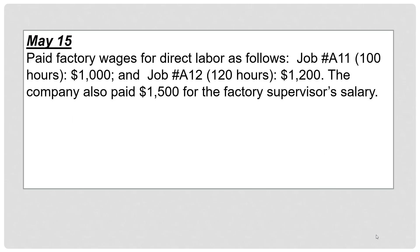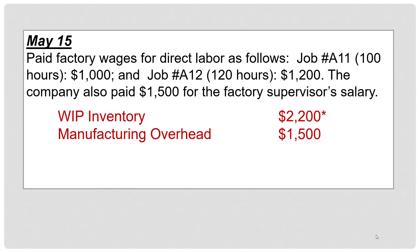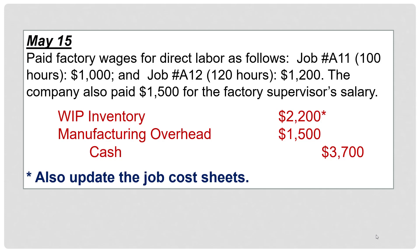May 15, paid factory wages for direct labor as follows: Job A11, 100 hours, $1,000; Job A12, 120 hours, $1,200. The company also paid $1,500 for the factory supervisor's salary. For direct labor, there would be a work ticket indicating where workers spent their time, traced to each job, so you debit work in process inventory — $1,000 for Job A11 and $1,200 for Job A12. For the factory supervisor, that is a manufacturing overhead cost, so you debit manufacturing overhead and credit cash for $3,700. You will update the job cost sheets.